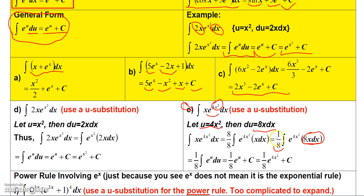After multiplying, the 8x dx becomes du and e^(4x²) becomes e^u. So I have 1/8 times the integral of e^u du. Integrating gives e^u, multiplied by 1/8, and replacing u with 4x² gives the final answer: 1/8·e^(4x²) plus a constant.